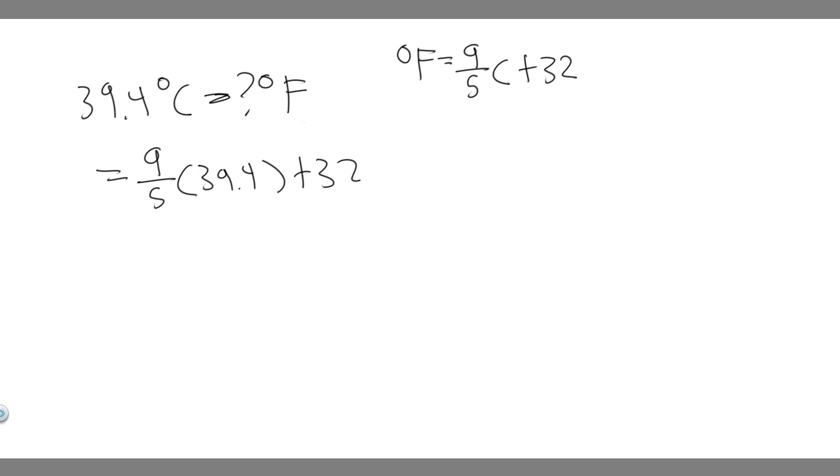So plug this in your calculator. You're going to do 9 divided by 5, multiply it by 39.4, and then you're going to add 32.